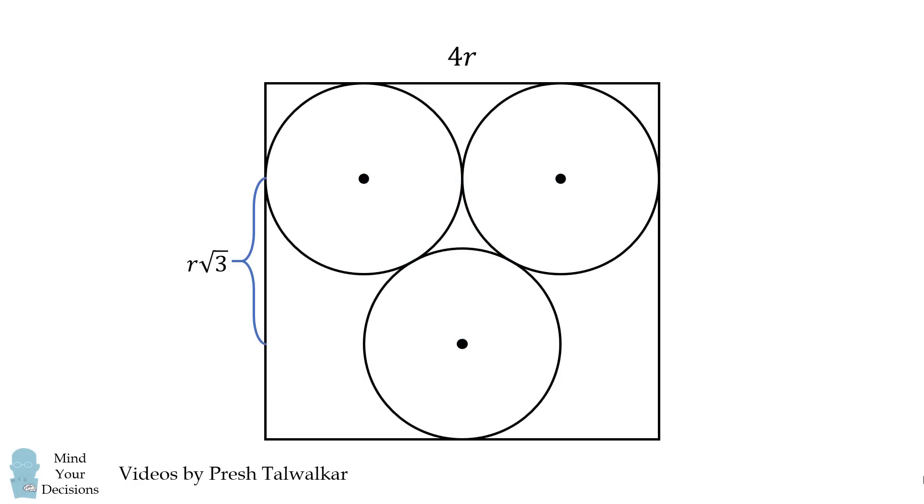To get the remaining length, we draw in these radii which have a length of r. So the total length of this side will be the sum of these values, which is equal to r times the quantity 2 plus the square root of 3.